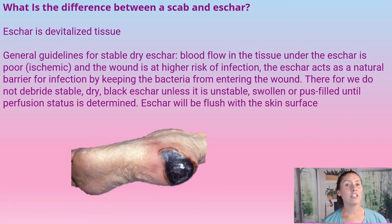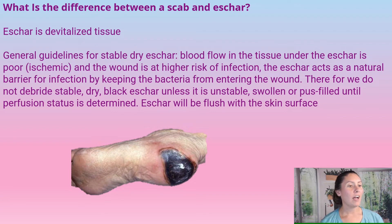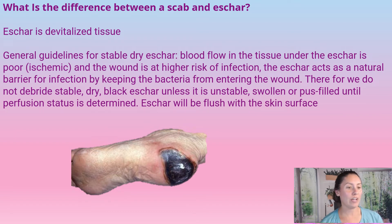Eschar is devitalized tissue — tissue that blood is not circulating to properly, so it dies. General guidelines for stable dry eschar: the blood flow to the tissue under the eschar is poor, so it's ischemic, and the wound is at higher risk of infection. The eschar is acting like a natural barrier from infections by keeping bacteria from entering the wound.